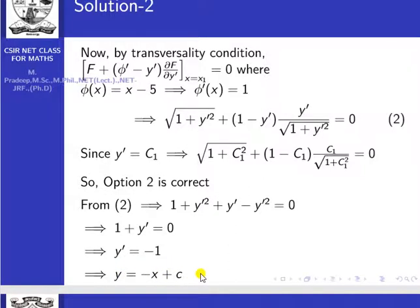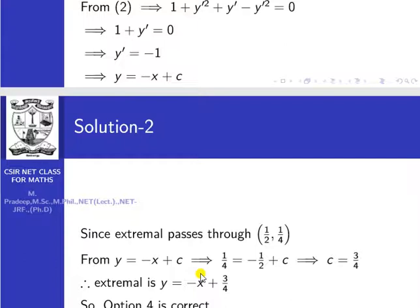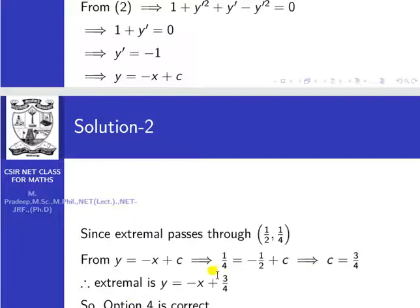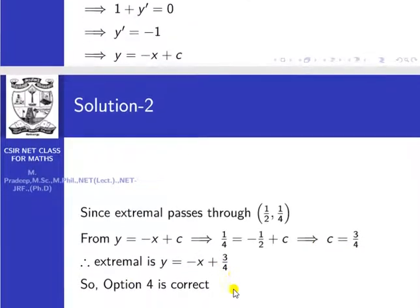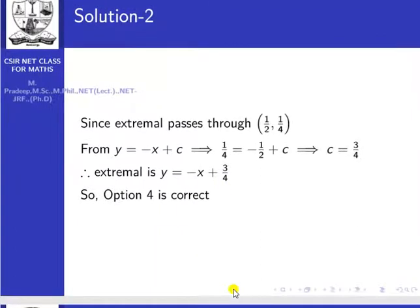Since this extremal also passes through (1/2, 1/4), substituting x equal to 1/2 and y equal to 1/4: 1/4 equal to minus 1/2 plus c, giving c equal to 3/4. Therefore the extremal is y equal to minus x plus 3/4. So Option 4 is correct.